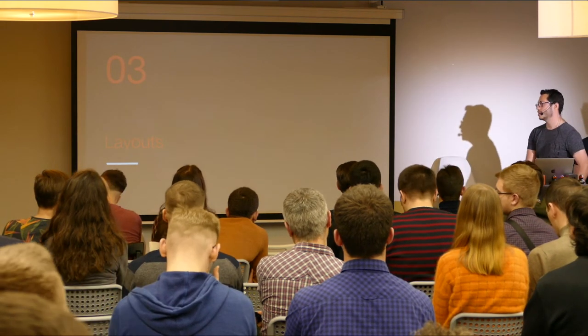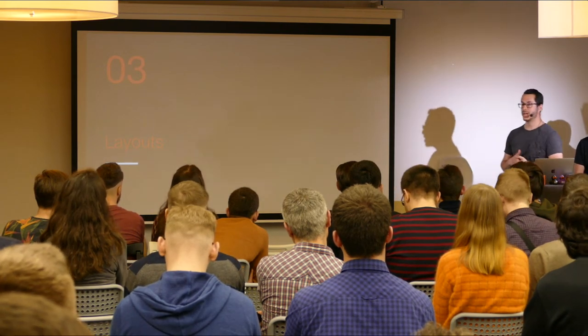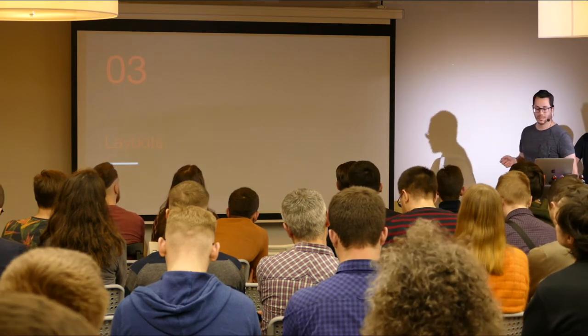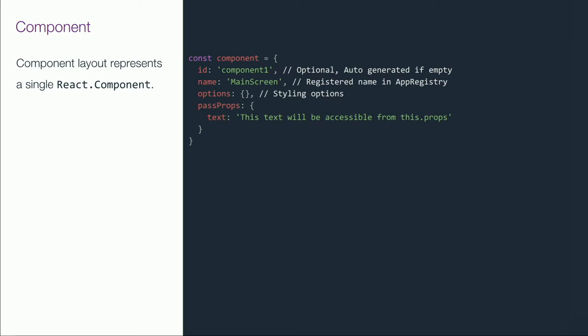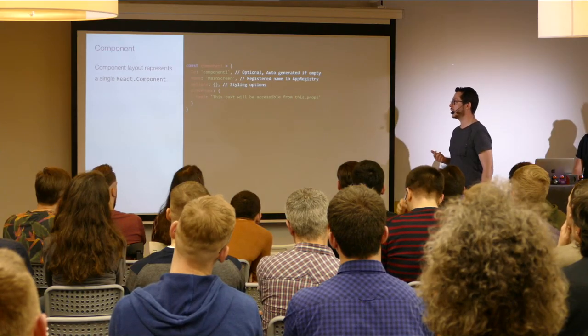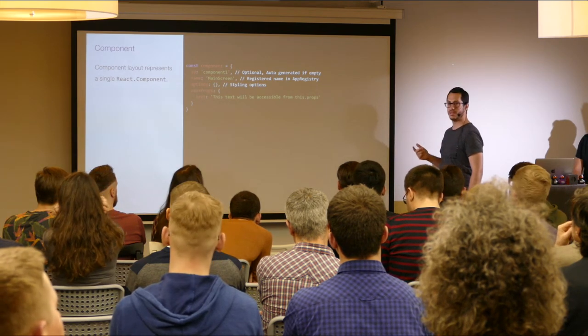Next we're going to talk about layouts and go over the API. In React, our content is written inside a React component. We promote an imperative API, but in React we're used to a declarative API and we declare layouts in JSX. Since we're only going to declare our layouts once and send those declarations to native, the simplest way we found was using a JSON. The first parameter in declaring a component is an ID — it's optional, but if you provide it you'll use this ID to interact with the component. The second very important parameter is the component name.